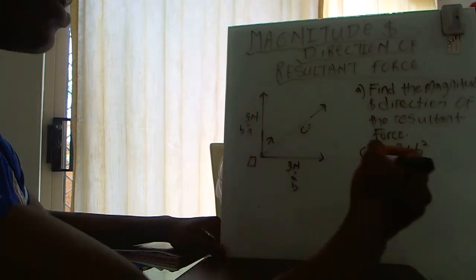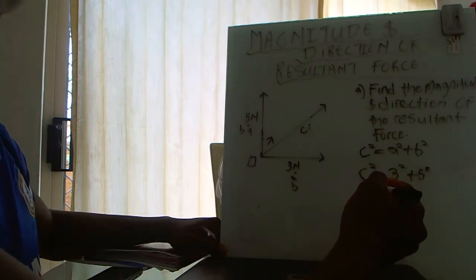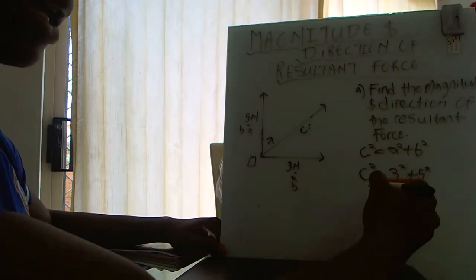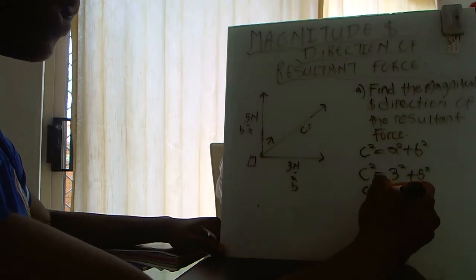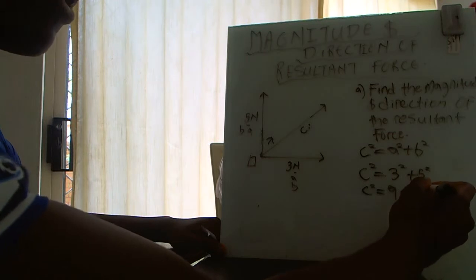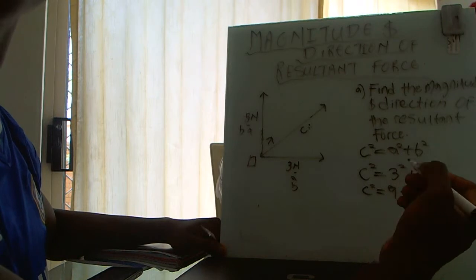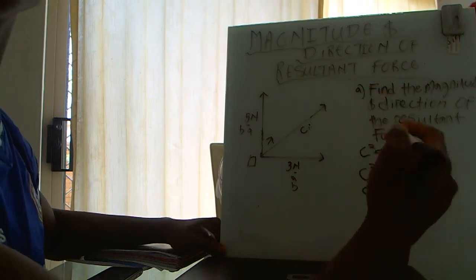and our b is five newtons, plus five squared. When you calculate that, it will give you c squared equals nine plus twenty five.